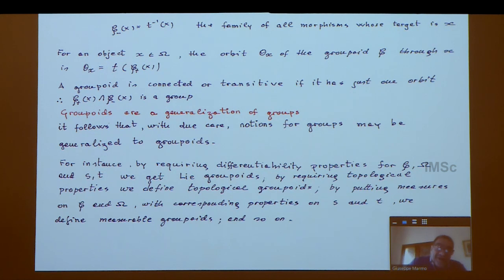Roughly speaking, from here you can mimic all the properties and definitions you can give for a group. In particular, by requiring differentiability properties for G and omega and the maps, you get Lie groupoids. If you require continuity and topological properties, you get topological groupoids. With measures on the two spaces, you get measurable groupoids, and so on.